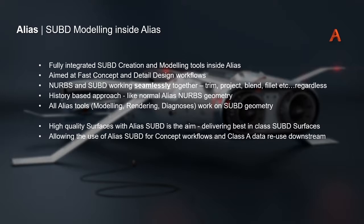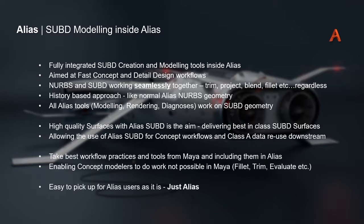The aim is to build and develop the highest quality sub-Ds possible, so you can take that surface and reuse the sub-D wherever you need it. We want to build the best sub-D surface from the start within Alias, with controls and tools to help you modify and control it precisely. While building these tools for concept workflows, you should be able to reuse these surfaces downstream — convert them to NURBS and carry on using them throughout the process.